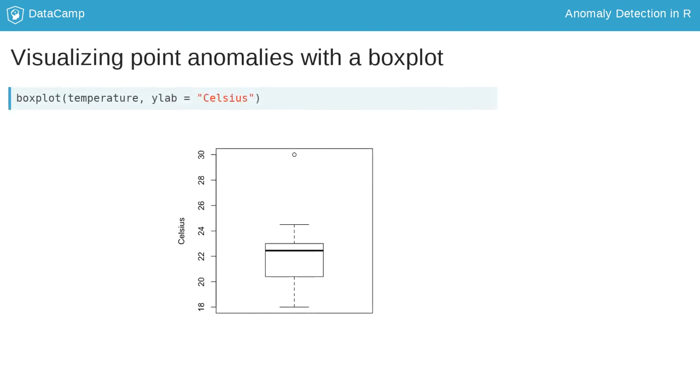The easiest way to get a sense for how unusual a particular value is, is by using a graphical summary like a boxplot. In R, this is created using the boxplot function.